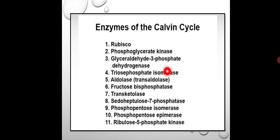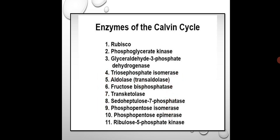The third enzyme is glyceraldehyde-3-phosphate dehydrogenase — since dehydrogenase is in the name, NADH is involved here. Then the enzymes involved in the regeneration process are: triose phosphate isomerase, aldolase, fructose bisphosphatase, transketolase, sedoheptulose 7-phosphatase, phosphopentose isomerase, phosphopentose epimerase, and ribulose-5-phosphate kinase. Enzymes number 4 to 11 are all involved in the regeneration process — regenerating glyceraldehyde-3-phosphate back to RUBP through many intermediate reactions.